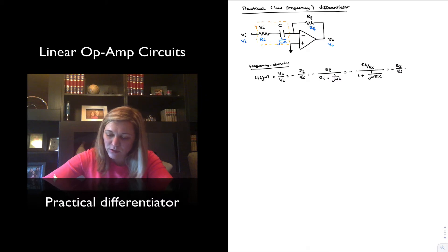I can factor it out and multiply numerator and denominator times j omega. Doing it all in one step, I will be left with minus Rf over Ri times j omega divided by j omega plus 1 over Ri times c.